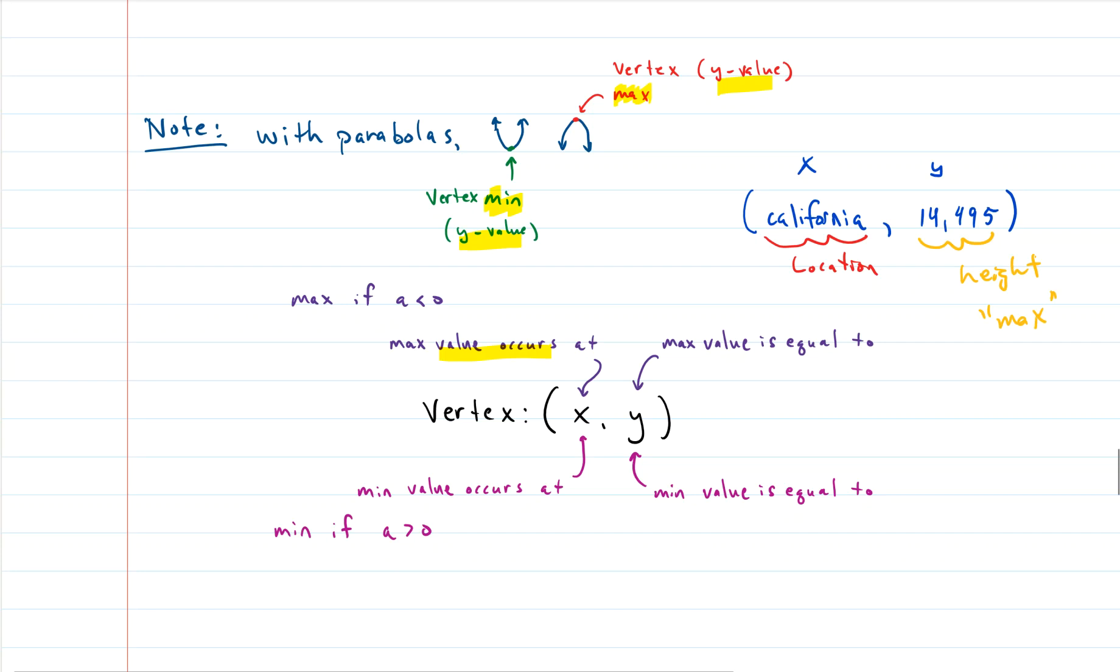So so many times when a teacher asks for the maximum value students will give the location. So that's just as if I had said hey, what is the highest point in the continental US, what is the height of the highest point in the continental US and you answered California and I'm like no that's where that mountain is. So that's the state that has the highest mountain but what is the actual height of the highest mountain? You said California. I'm like no no that's not what I'm talking about I want the height. The height would be the 14,495 feet. So please remember that.